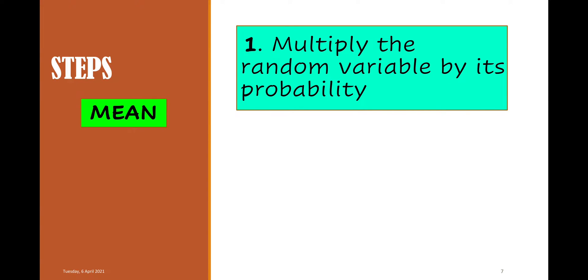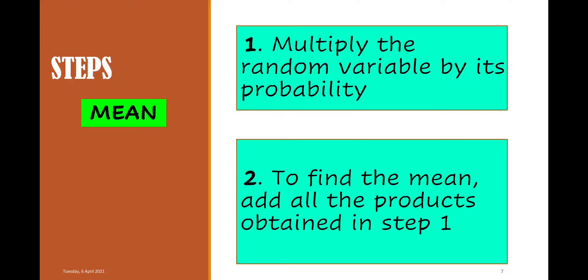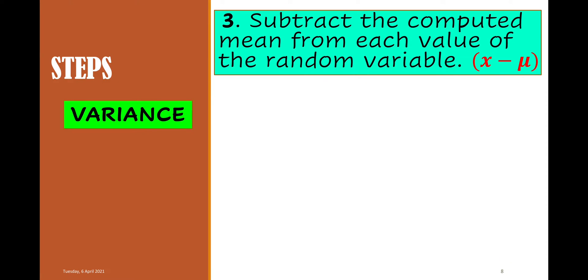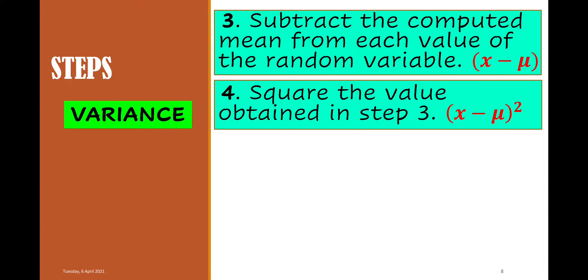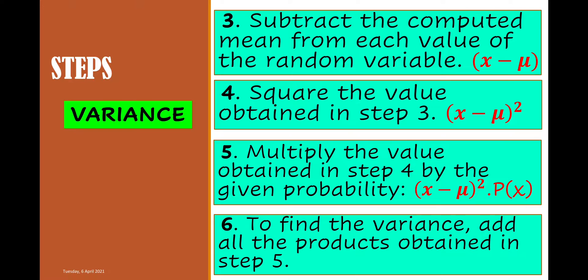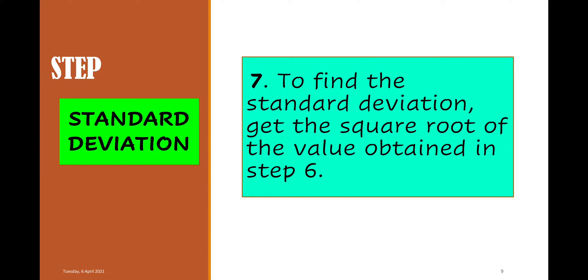Steps in finding the mean: First, multiply the random variable by its probability. Second, to find the mean, add all the products obtained in step 1. Steps in finding the variance: Subtract the computed mean from each value of the random variable, giving x minus mean. Then square the value obtained. Then multiply that squared difference by the given probability, P(x). Finally, add all those products to get the variance. To find the standard deviation, get the square root of the variance.